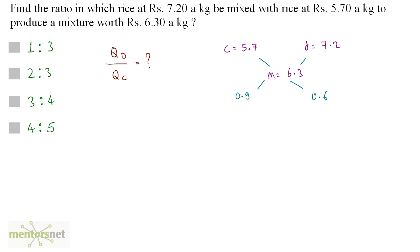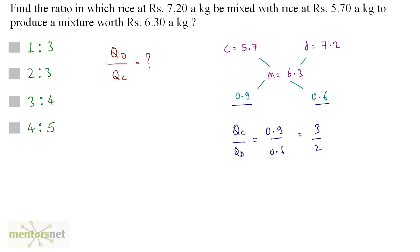According to the allegation rule, QC by QD — the ratio of the quantity of cheaper to the quantity of costlier — equals 0.9 divided by 0.6, which is 9 by 6. Dividing both numerator and denominator by 3 gives 3 by 2. To get QD by QC we take the reciprocal, which is 2 by 3. So 2 is to 3 is the ratio. Option B is the correct answer.